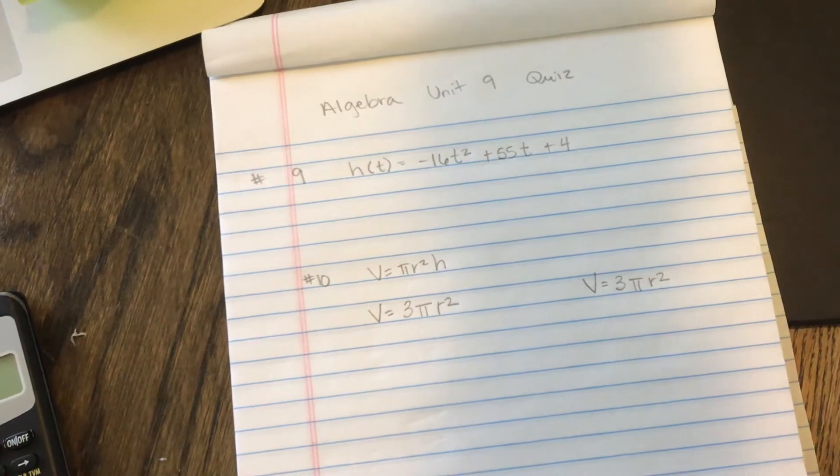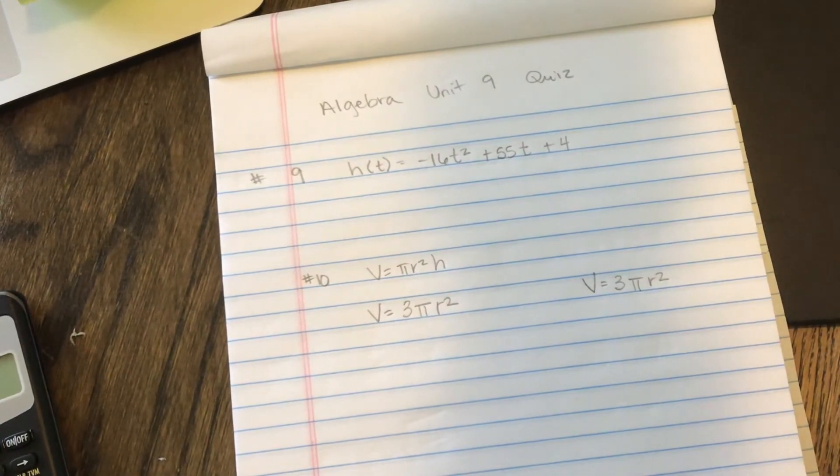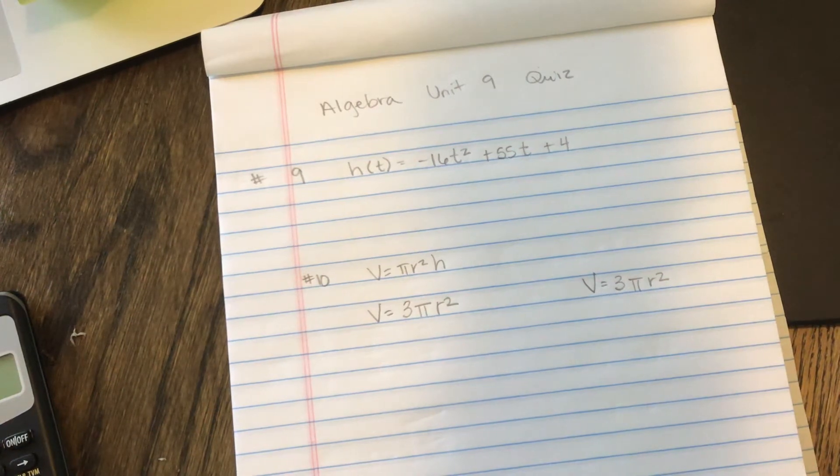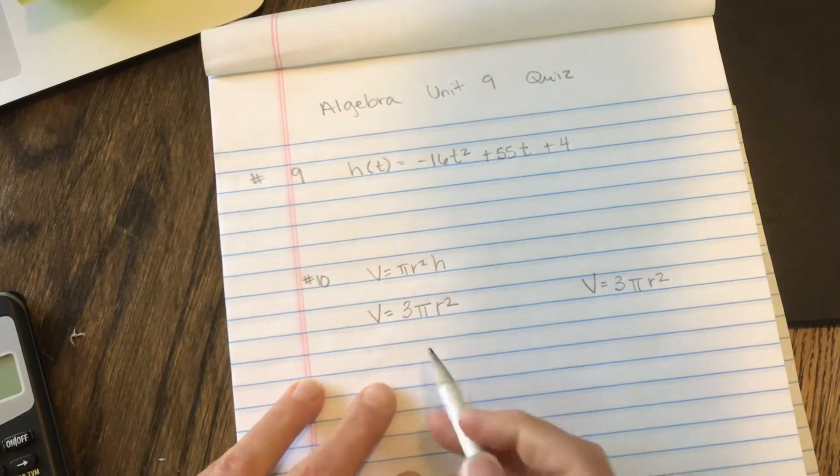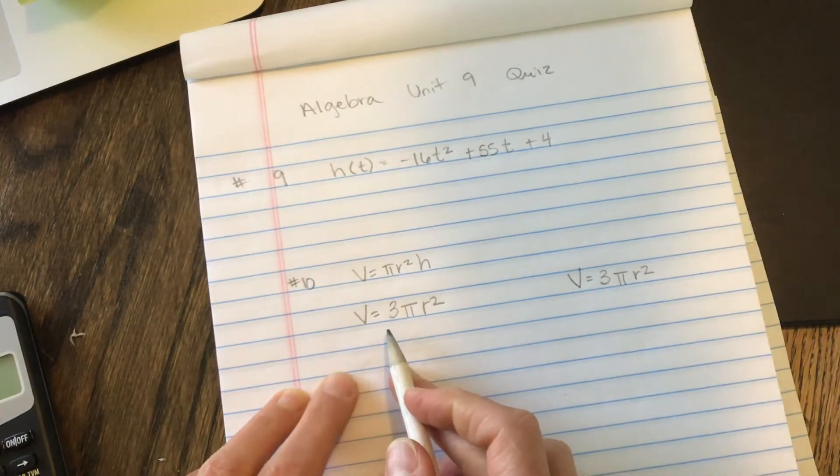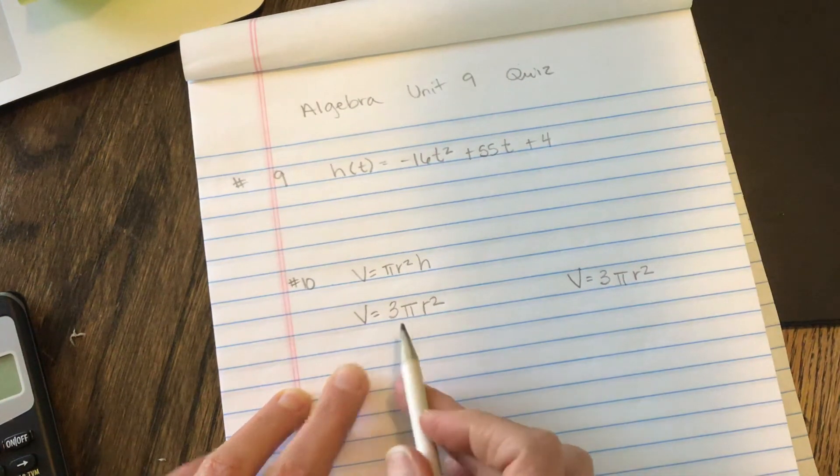The volume in cubic feet of a right cylinder with a height of 3 feet and a radius R in feet is given by V = 3πR². Use the formula to find the radius of the cylinder when the volume is 236 cubic feet. Round your answer to the nearest whole number. All right, so let's start solving.